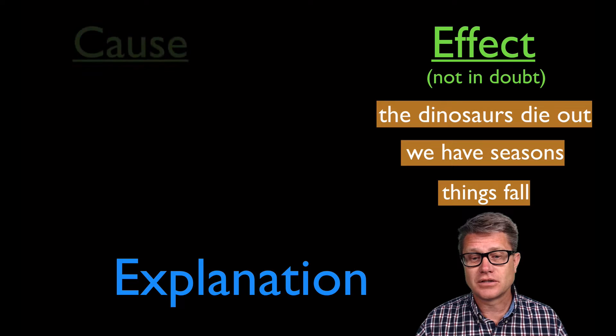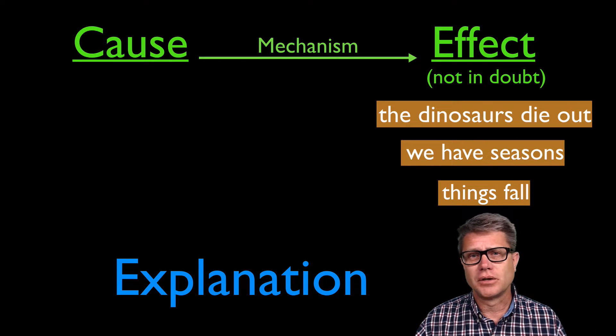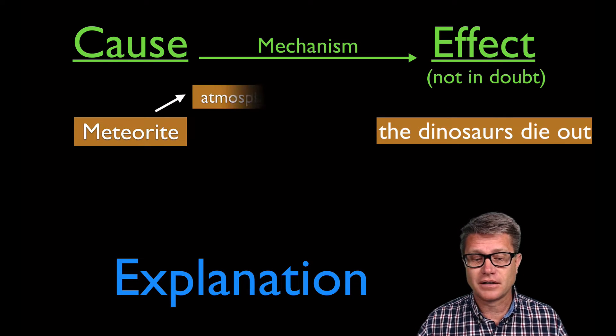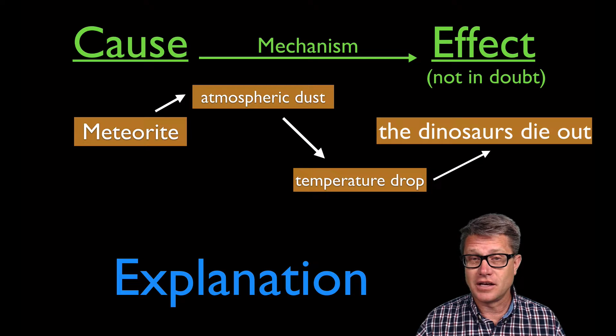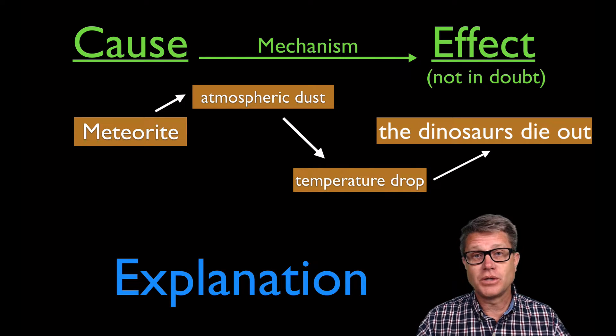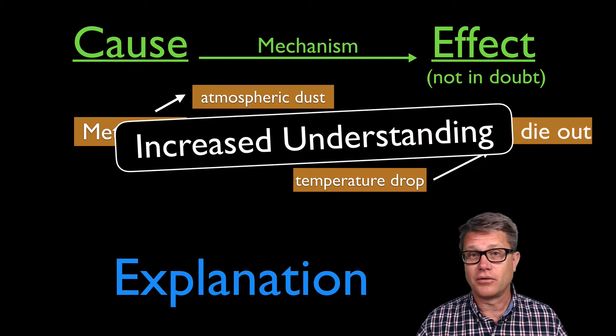What is an explanation going to do? It's going to determine the cause and the mechanism for these effects. So if we look at dinosaurs, for example, you've probably heard a lot of people think there's a massive meteorite impact that threw atmospheric dust into the atmosphere, temperature dropped, and then the dinosaurs died out. And so as we create that explanation, it brings increased understanding to how the world works.